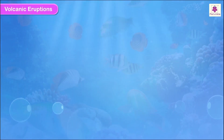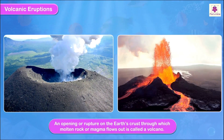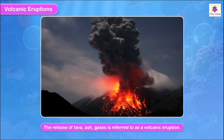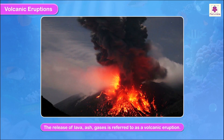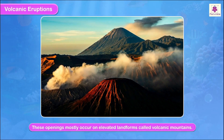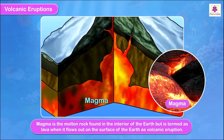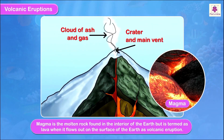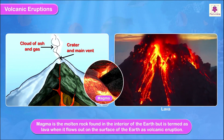Volcanic eruptions: An opening or rupture on the earth's crust through which molten rock or magma flows out is called a volcano, and the release of lava, ash, and gases is referred to as a volcanic eruption. These openings mostly occur on elevated landforms called volcanic mountains. Magma is the molten rock found in the interior of the earth, but is termed as lava when it flows out on the surface of the earth.